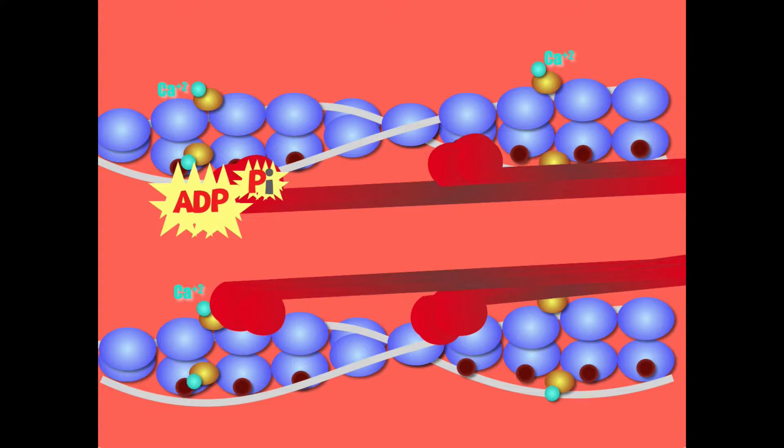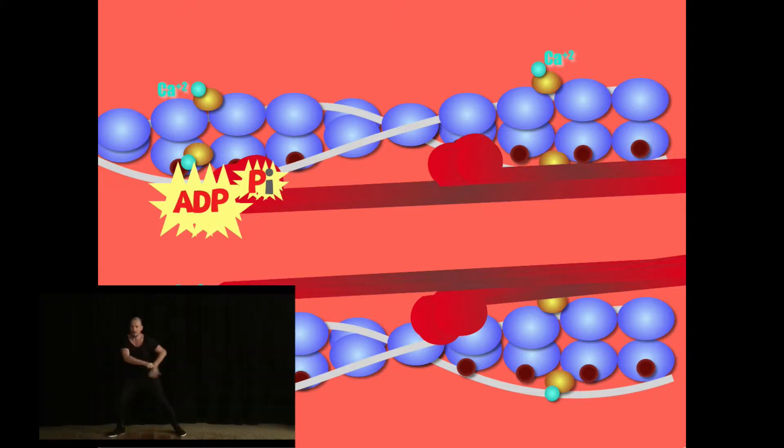As this cross bridge formation is being made, the next step would be the power stroke, or the sliding of the thin filament over the thick filament. Imagine pulling in a boat by a rope.